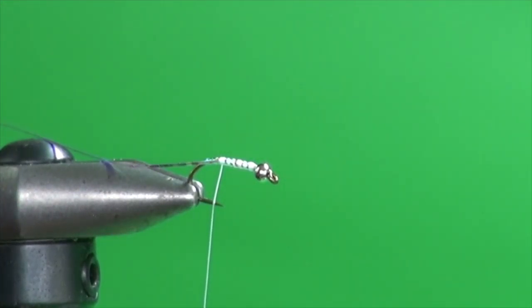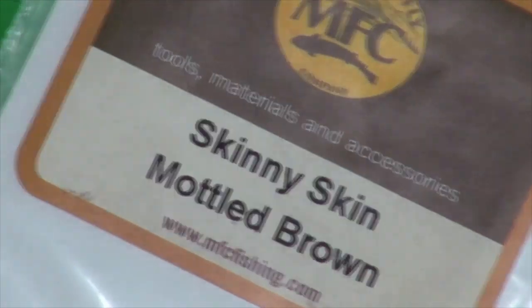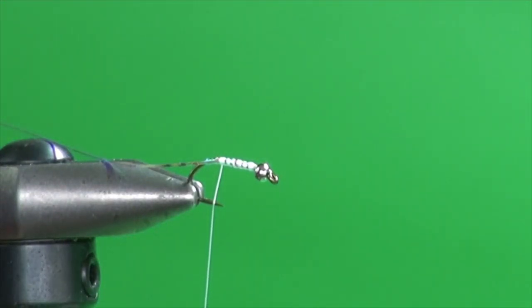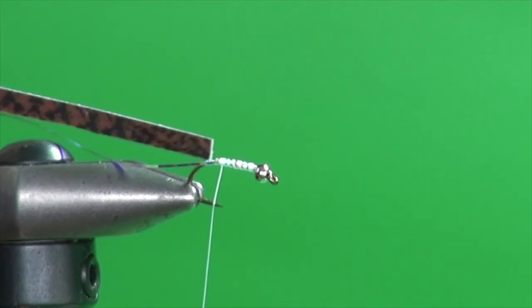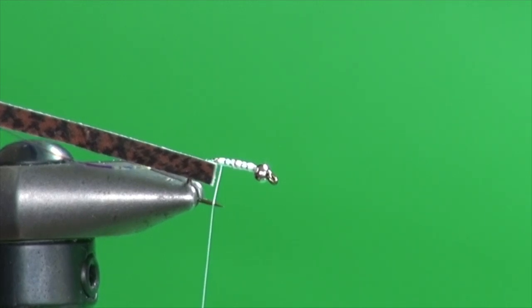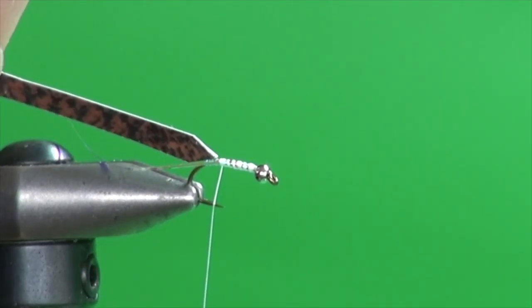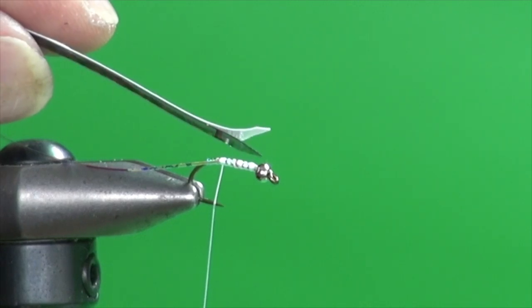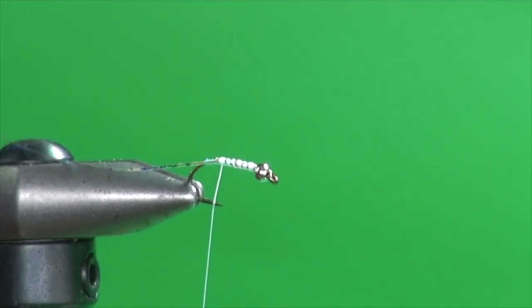So we're just going to hold that in place. Now we're going to tie in the wing case. And for the wing case, I'm using some skinny skin in mottled brown and it comes in a big sheet. I'll show you what that looks like here. And I have trimmed a slip off of that sheet across its width. So it's about half the shank length. Sorry, half the hook gape. And then I've taken the other end and trimmed it to a point to aid tie in.